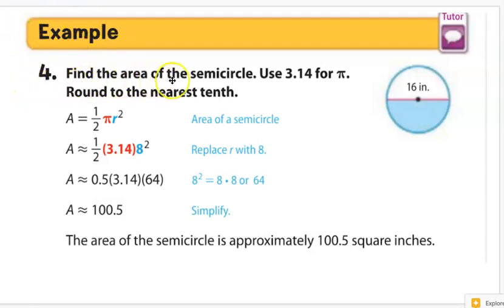So in example 4, it says to find the area of the semicircle, use 3.14 for pi, and then round it to the nearest tenth.